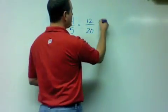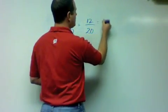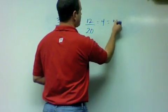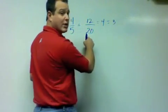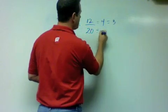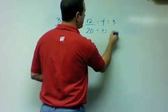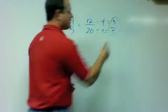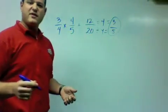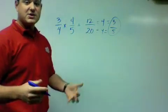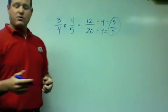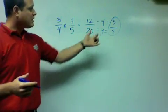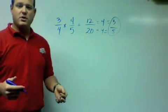Twelve divided by four is three. Twenty divided by four is five. That gives me three-fifths as a final answer, and that is three-fourths times four-fifths in simplest form.